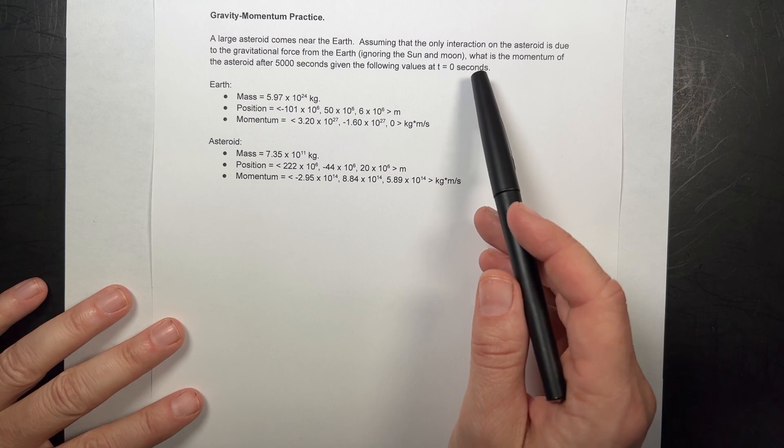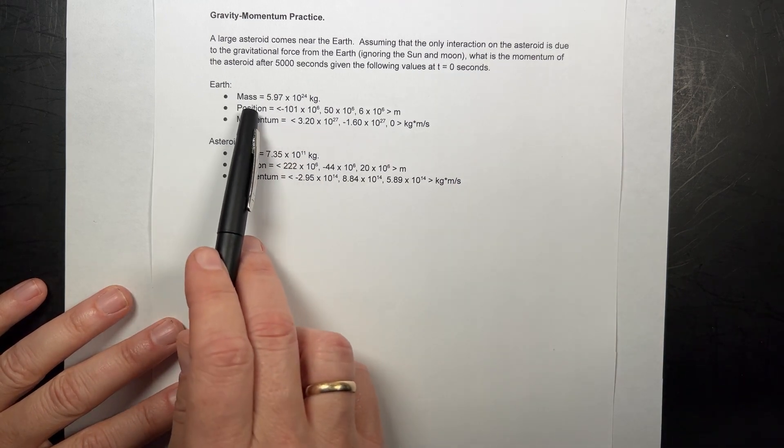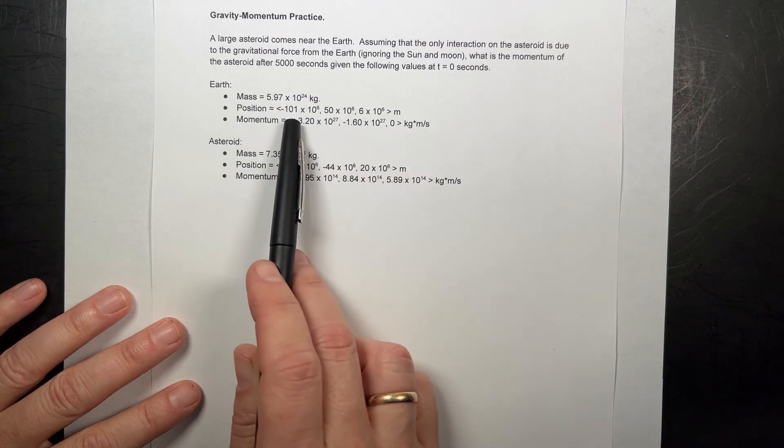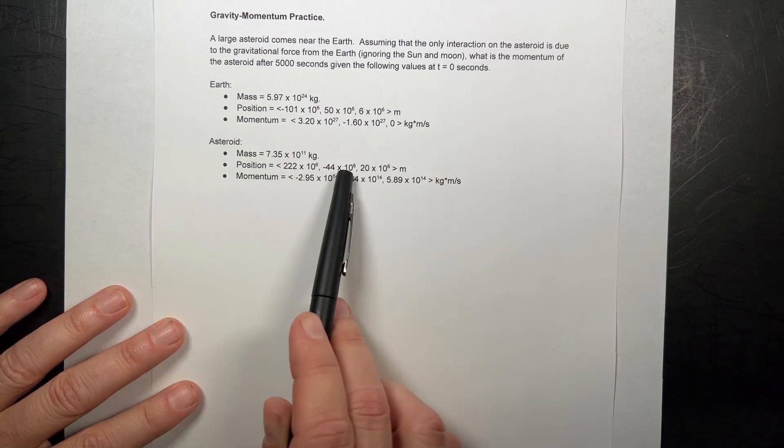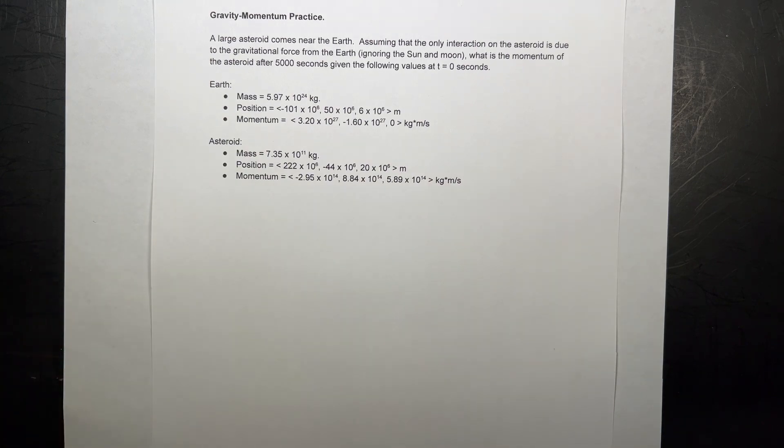Given at t equals zero seconds: the mass of the Earth, the position of the Earth, the momentum of the Earth, the mass of the asteroid, the position of the asteroid, and the momentum of the asteroid.